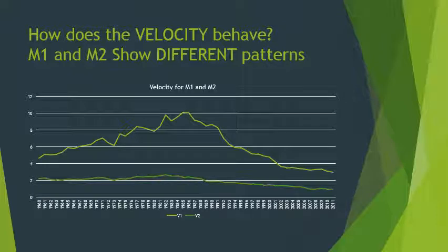One of the key assumptions of the quantity theory is that velocity is either constant or exogenous and doesn't matter for understanding the relation between money and prices. This graph plots the velocity of money for both M1 and M2. The top line is M1 velocity — nominal GDP divided by the quantity of money. It shows a clear pattern of increase from 1960 up to about 1987, then a clear pattern of decrease, changing from 4 to about 10, then decreasing back to about 3 — a huge variation in velocity.